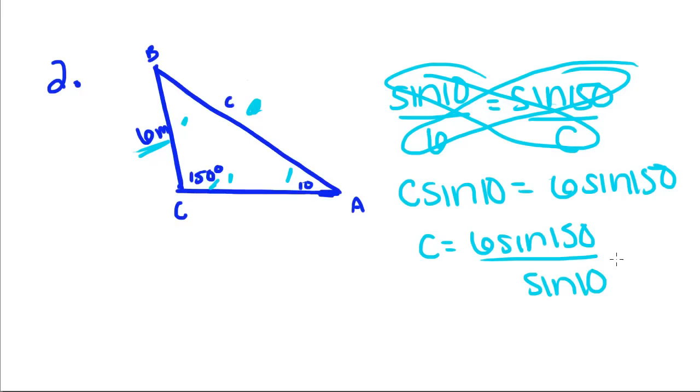So when we put it in the calculator, we're going to do parenthesis, 6 sine of 150, parenthesis, divided by sine of 10. And if you do that, you get C is equal to 17.276.